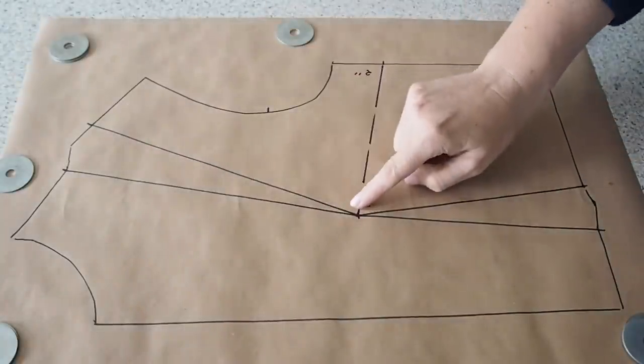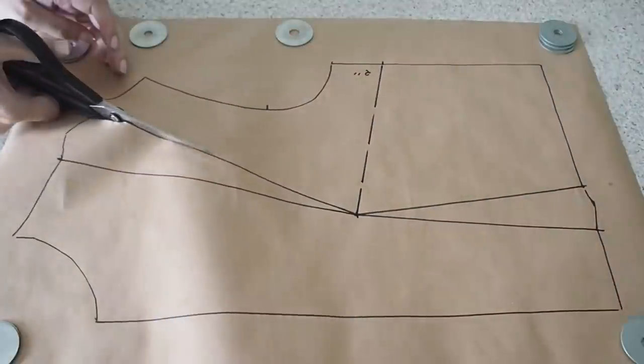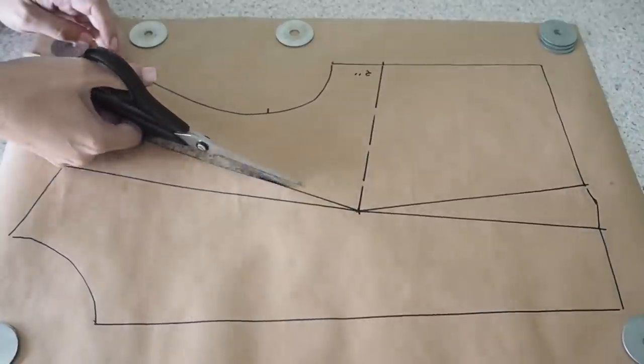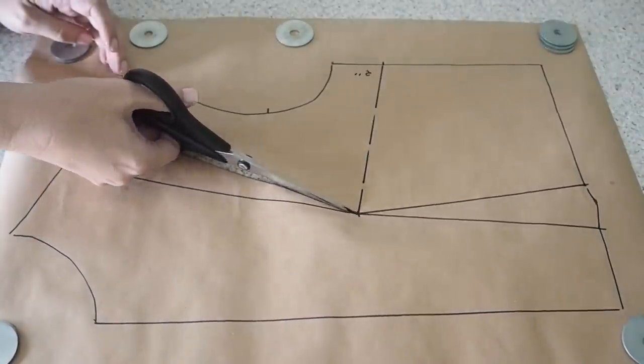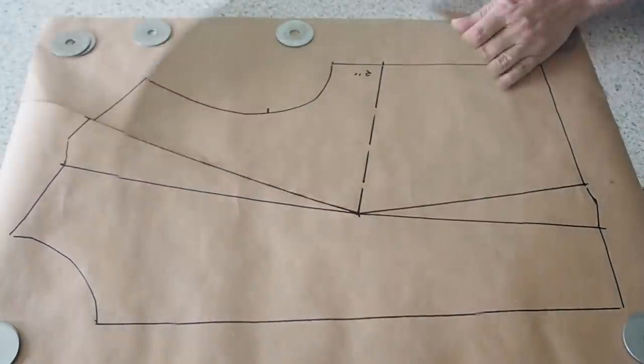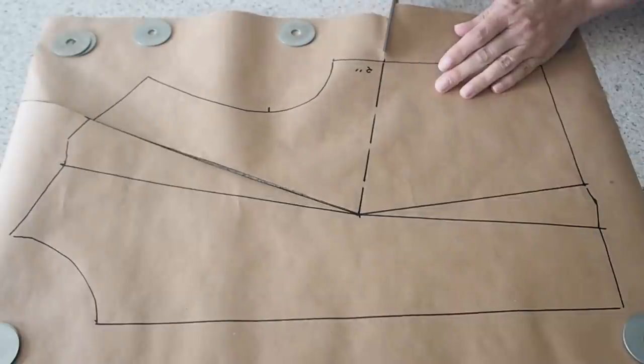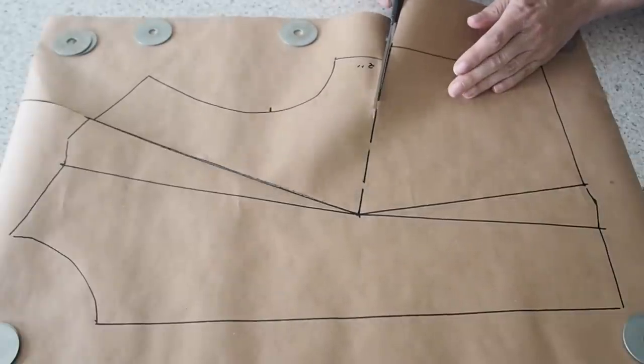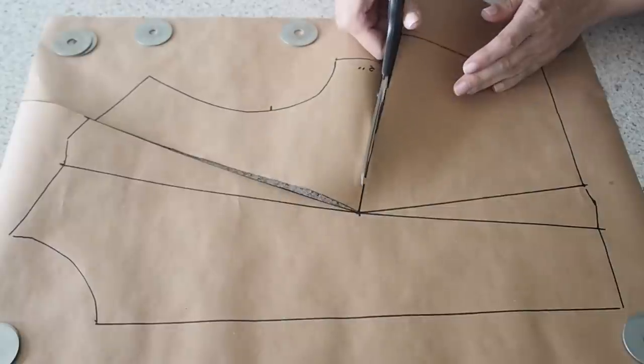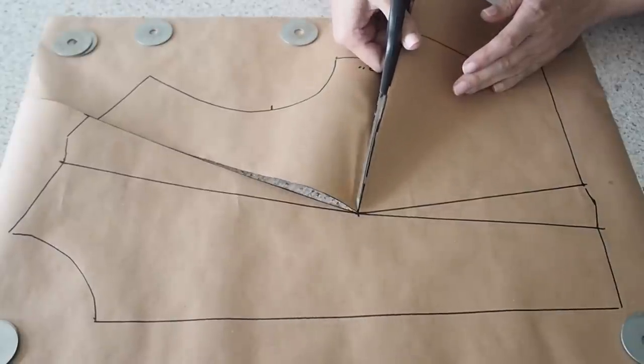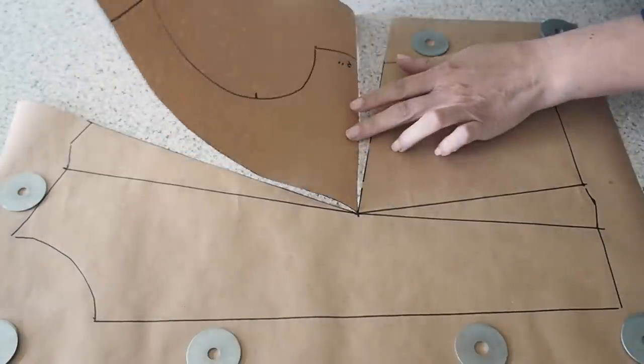So the next step is to close that shoulder dart. So to do that, I'm cutting through one of the dart legs and also right through that new line I've drawn for my side seam dart. Cutting right up to the apex, but not through the apex, giving myself a little hinge there.